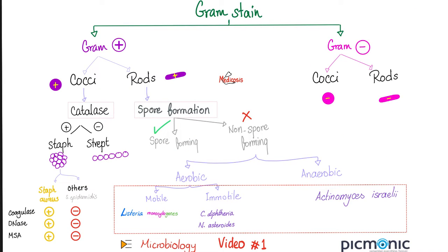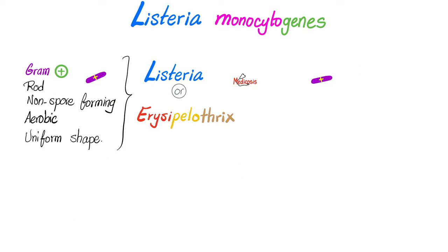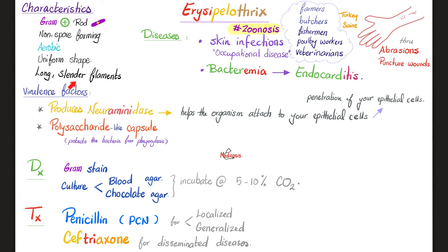Erysipelothrix is similar in morphology to listeria. It's a gram-positive rod, non-spore-forming, aerobic, and uniform in shape. It is also long, slender, and filamentous — you can see very thin filaments. That's why we call it 'thrix,' because it's filamentous and lives underneath the surface of the skin.